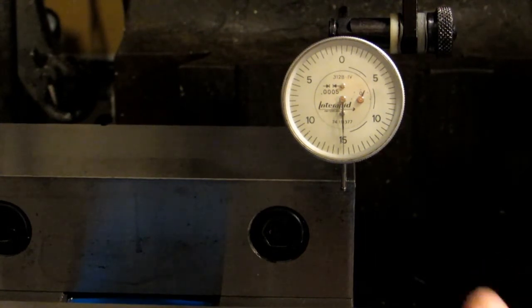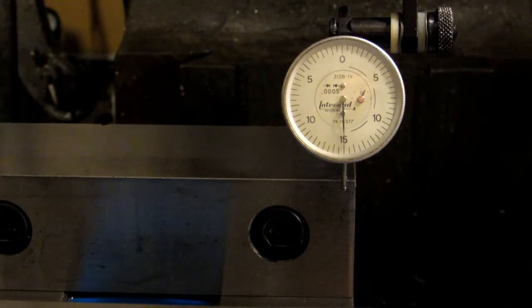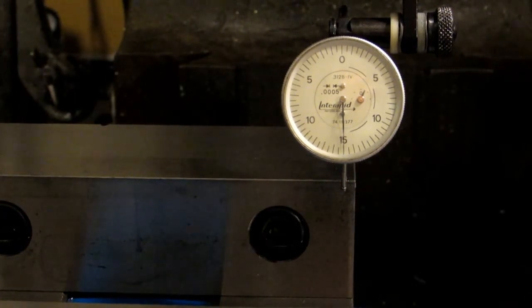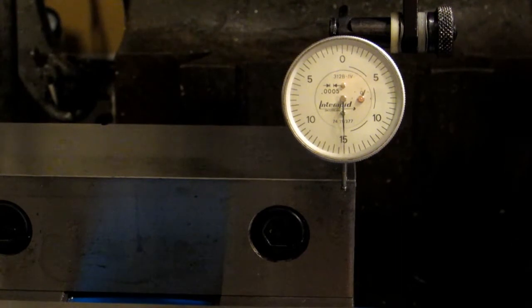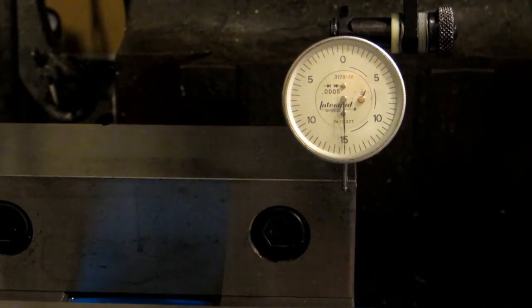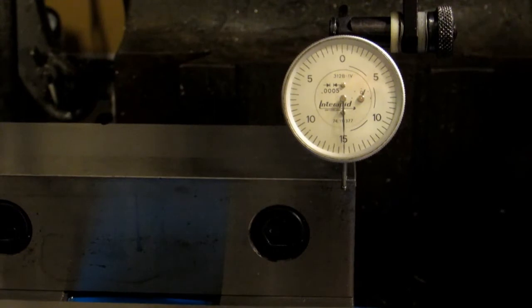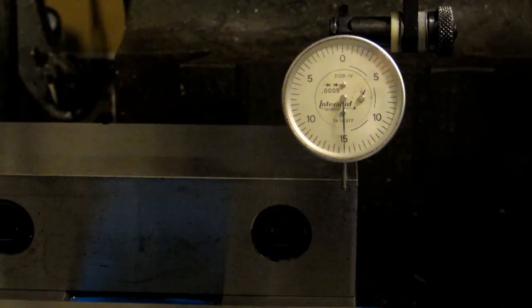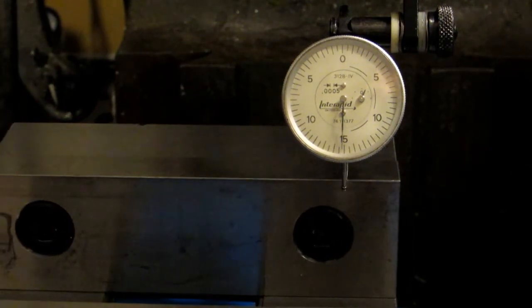One important note, this is an Interapid indicator and it moves in the opposite direction of pretty much every indicator out there. The needle moves counterclockwise when the indicator is getting tightened, when it's getting more contact. Every other indicator moves clockwise when you're getting more contact. The important reason for knowing which way it moves when it tightens is right now. I'm going to move to the other side of the vise now.